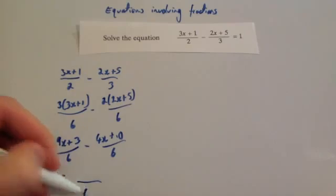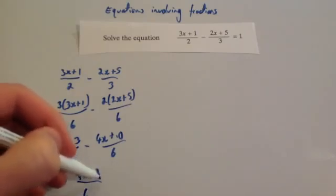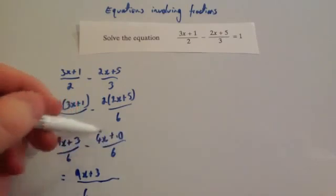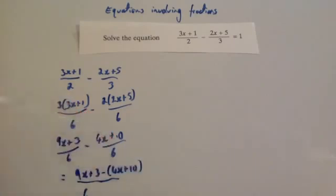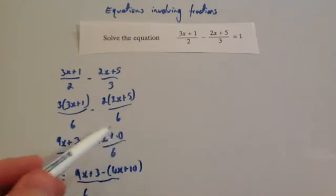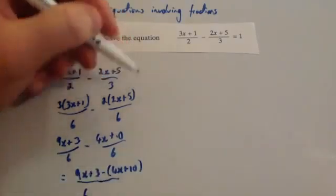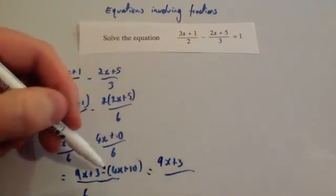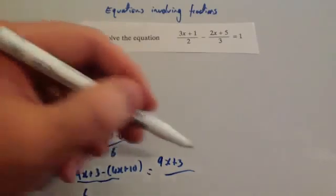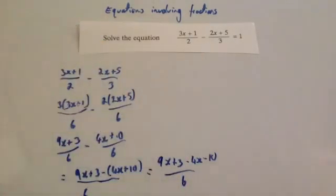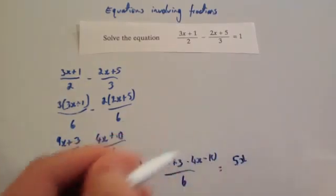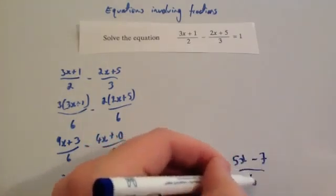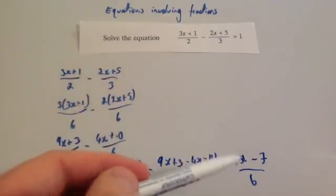Let's simplify. We're going to have altogether 9x plus 3, and be careful here — whenever you're subtracting a fraction, put the numerator in brackets: subtract bracket 4x plus 10. You've got to be careful when subtracting a fraction so that you include all terms on the numerator in the bracket. That gives you 9x plus 3, and then you expand the bracket — there's a minus 1 here really, so you times both terms by minus 1 — giving minus 4x minus 10, all divided by 6. Simplifying: 9x take away 4x is 5x, and 3 subtract 10 is minus 7, divided by 6. So the left-hand side equals 5x subtract 7 divided by 6.